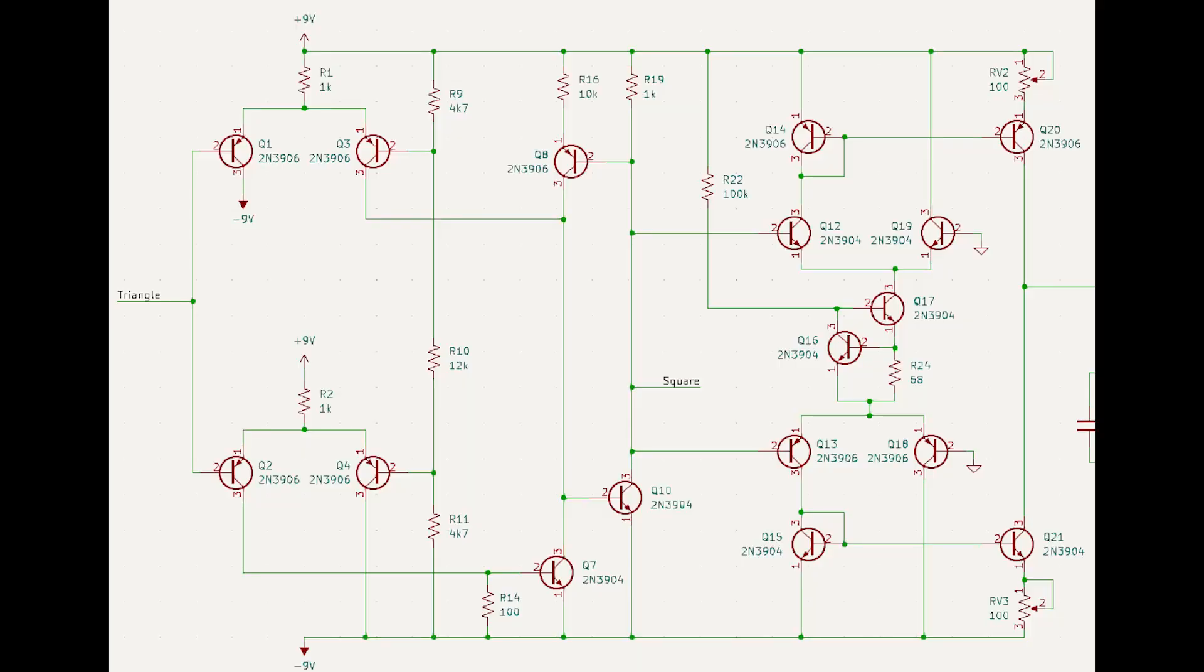In order to detect when these threshold voltages have been reached, I used differential amplifiers acting as comparators. The specific voltage thresholds are determined by a resistor divider. Now that we have the comparators, we just need to find a way to latch the output either high or low until the other comparator latches it in the other direction.